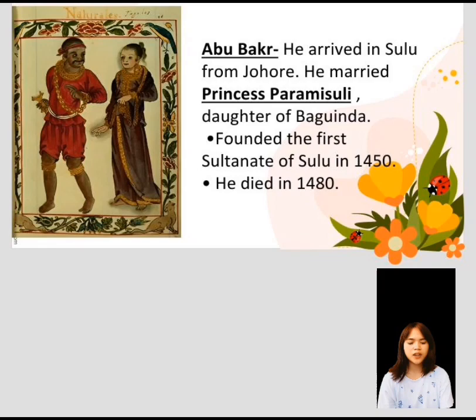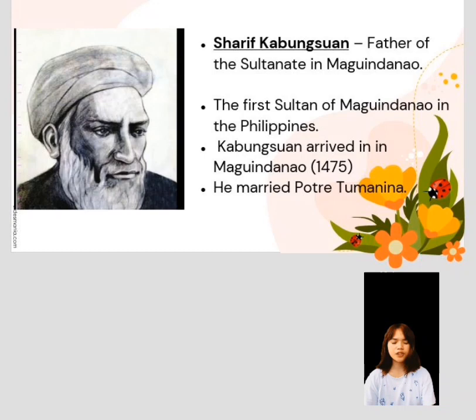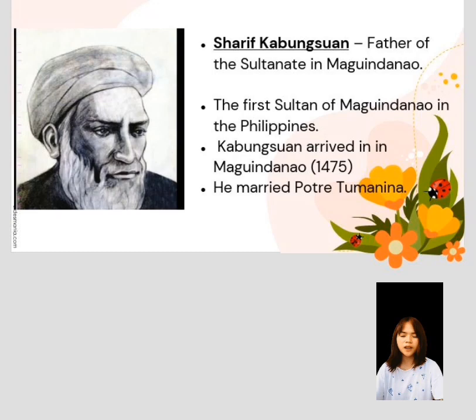Sheriff Kabungsoan, father of the Sultanate in Maguindanao, was the first Sultan of Maguindanao and the Philippines. Kabungsoan arrived in Maguindanao in 1475 and married Potri Manena. They became the first Sultan and Sultana in Maguindanao.